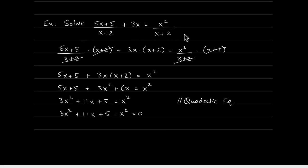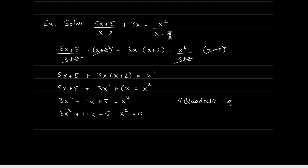Now we apply that same idea to a section 7.3 rational equation. The exact same approach is used: first get rid of the fractions. The LCD of the denominators is x plus 2, because x plus 2 appears in both denominators, so x plus 2 is multiplied twice.